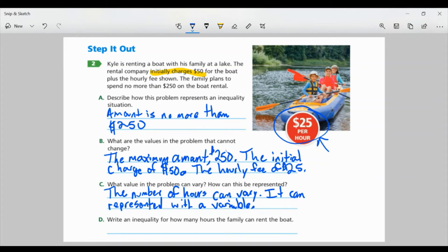Part D. Write an inequality for how many hours the family can rent the boat. Well, I know the initial fee is $50. And I know I have an hourly fee of $25 per hour. The max amount they want to spend is $250. And since that's the max amount, that means this over here has to be less than or equal to $250.